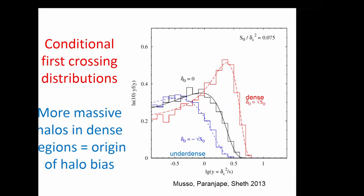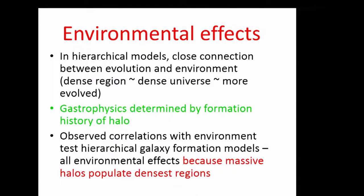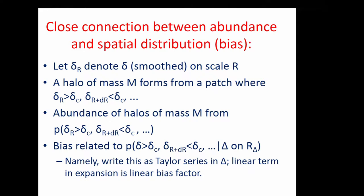This is the main idea for understanding almost everything about galaxy clustering: dense regions have more massive halos; more massive halos sitting in denser regions are more biased. The reason galaxy properties depend on environment is almost entirely this effect — galaxies sit in halos and the mix of halos is different in different environments.